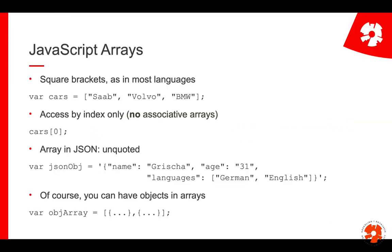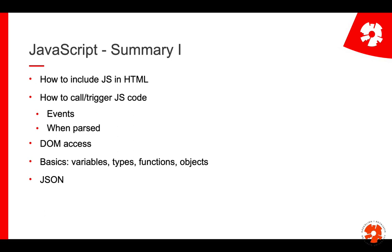That covers arrays and concludes this module on JavaScript. Overall, in the first eight parts of this JavaScript module we've learned how to include JavaScript in HTML, the different ways to call and trigger JS code using HTML events and document parsing, how to access the DOM — getting elements, changing them, removing and adding new ones — and the basics of JavaScript: variables, types, functions, objects, arrays, and JSON. In the next parts we'll dive into more advanced JavaScript behavior and quirks.